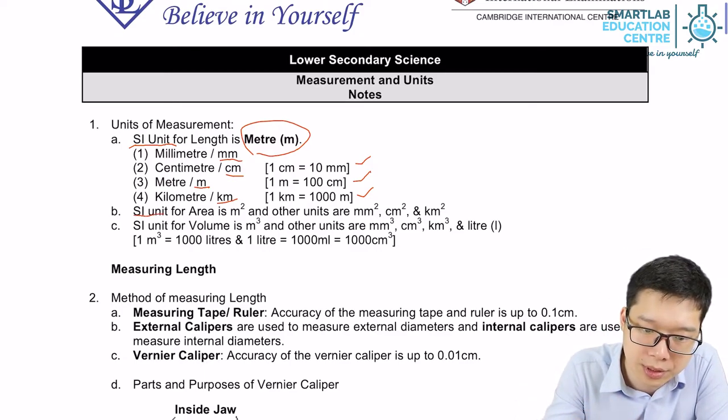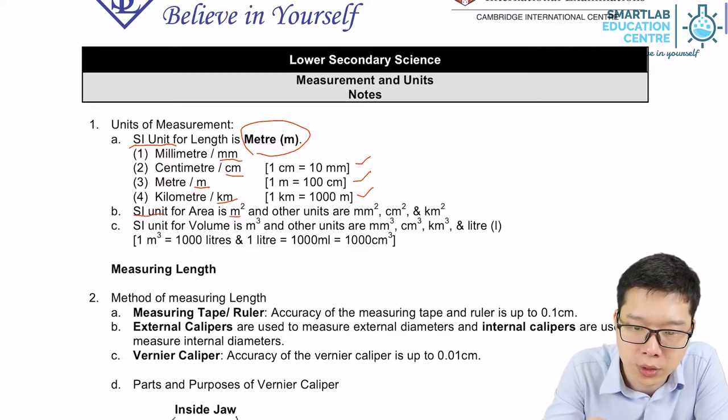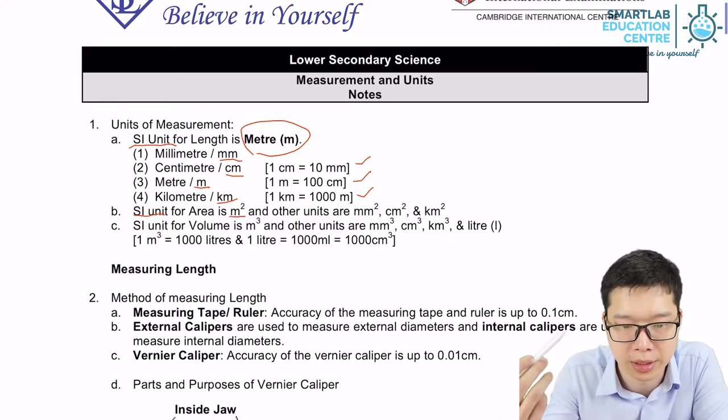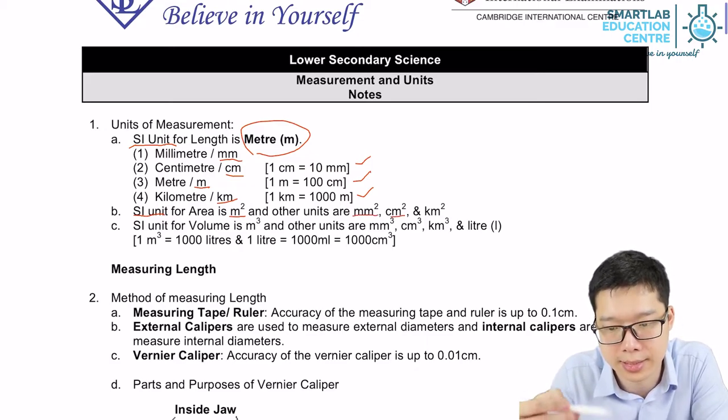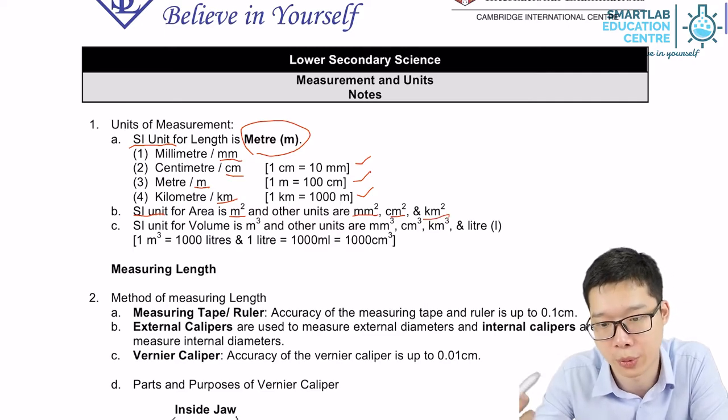And the SI unit for area is meter square. So if you measure your length in mm, your unit will be mm square, cm square, or km square.